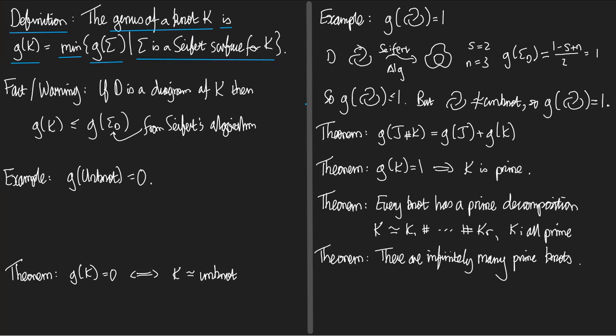Suppose you wanted to show that the genus was 2. Then you'd have to find a Seifert surface with genus 2, and you'd have to show that there weren't any with genus 0 or 1. What does that tell you? That tells you that the genus is hard to compute.